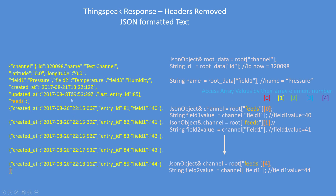On the left hand side is the JSON text and on the right hand side is how you structure the JSON decoder objects. The root of the JSON text is called channel, so you set the root to channel — that's the start of the reading process. That channel has entries called ID, name, latitude, longitude, etc. So if you want to get the ID number, you say root data ID and it will return 320098 for you.